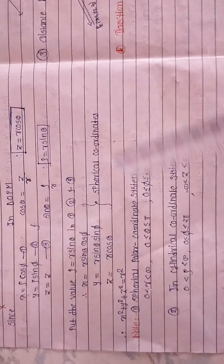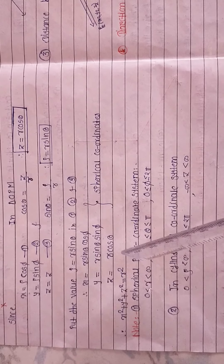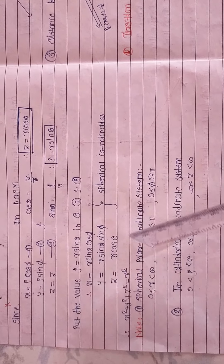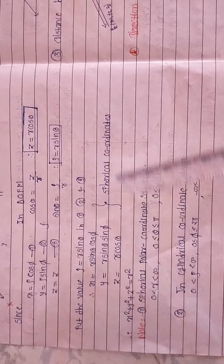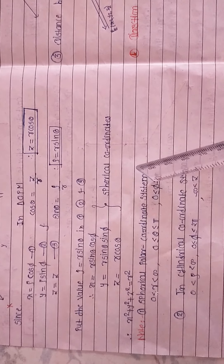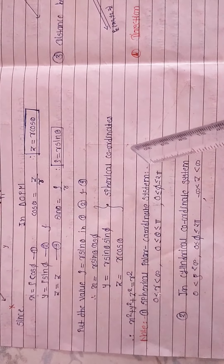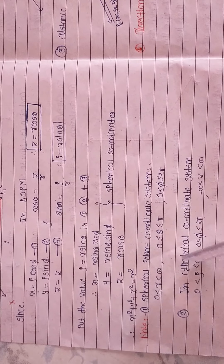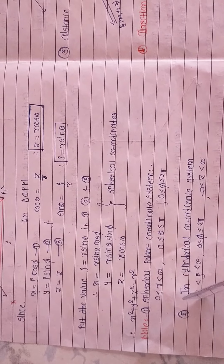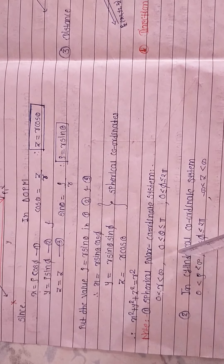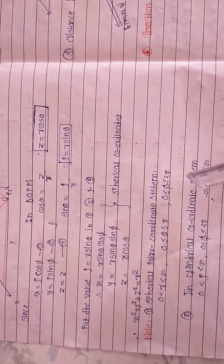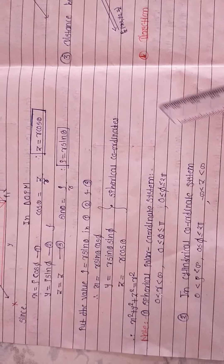In spherical polar coordinates, r always varies from greater than zero to less than infinity (a finite number), θ always varies from 0 to π (not 0 to 2π), and φ always varies from 0 to 2π, that is a 360° angle. In the cylindrical coordinate system, ρ varies from greater than zero to less than infinity, φ varies from 0 to 2π, and the height z varies from −∞ to +∞.